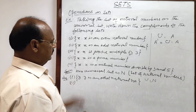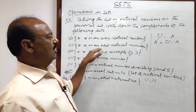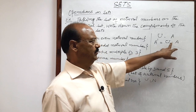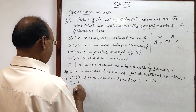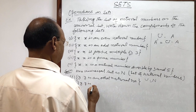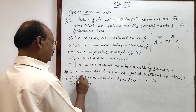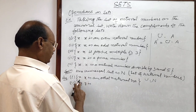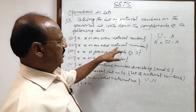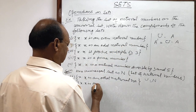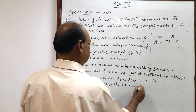Question two: x is an odd natural number — this is a set consisting of all odd natural numbers. If odd natural numbers are removed from the universal set, the even natural numbers will remain. So the complement is: {x : x is an even natural number}.